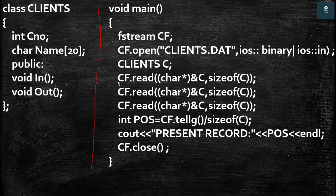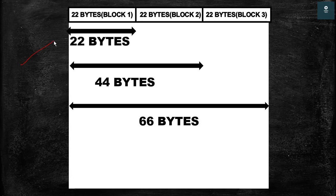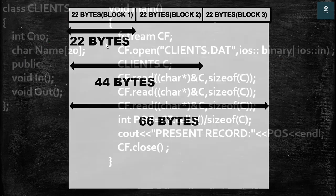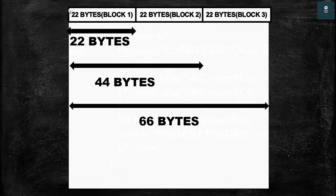In the main function, after opening the 'clients.dat' file, we have created an object of the clients class. Then we read the first object of the file. Suppose our file is like this — initially when the file is opened our get pointer is at the beginning, that is the zeroth location, because whenever a file is opened the get pointer will be at the beginning of the file. After reading the first object we have read 22 bytes, because the size of this object is 22. Therefore the first 22 bytes of the file are read, and the first block of this file is read.